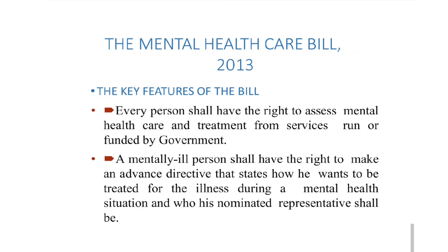A mentally ill person shall have the right to make an advanced directive that states how he wants to be treated for his illness during a mental health situation and who his nominated representative shall be. So if a person is going to have episodes or aggravation of his mental or physical illness, how he has to be treated and cared for, and who can be his guardian — all of this can be stated in an advanced directive.